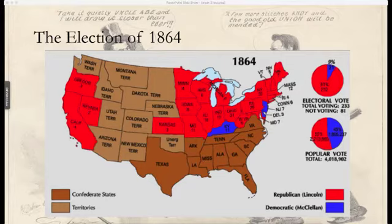General McClellan, who Lincoln had removed from command of the Union Army due to a string of defeats and missed opportunities, was running on the Democratic ticket against him. Abraham Lincoln recruited Andrew Johnson as his running mate in order to draw the Northern Democratic votes into his National Union party ticket.